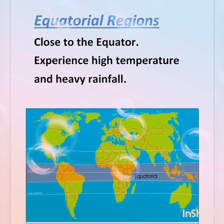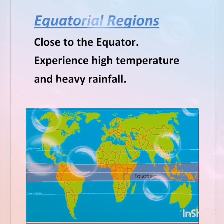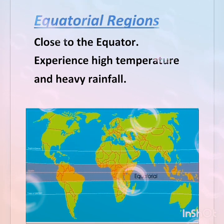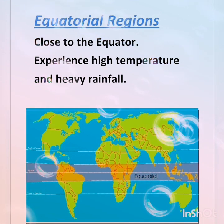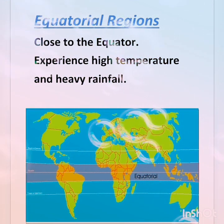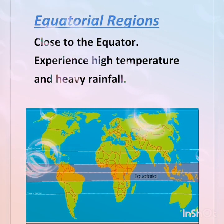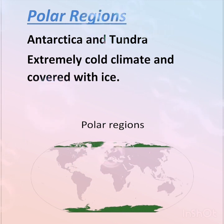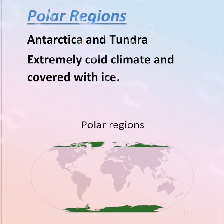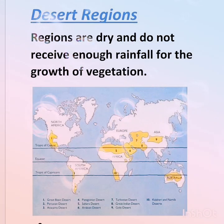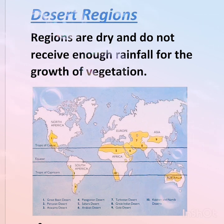Equatorial regions are the regions close to the equator. These regions experience high temperature and heavy rainfall throughout the year, which do not support population growth. Polar regions, which are extremely cold and covered with ice, such as Antarctica and the Tundra, make it very difficult for people to survive. Desert regions are very dry and do not receive enough rainfall for the growth of vegetation.